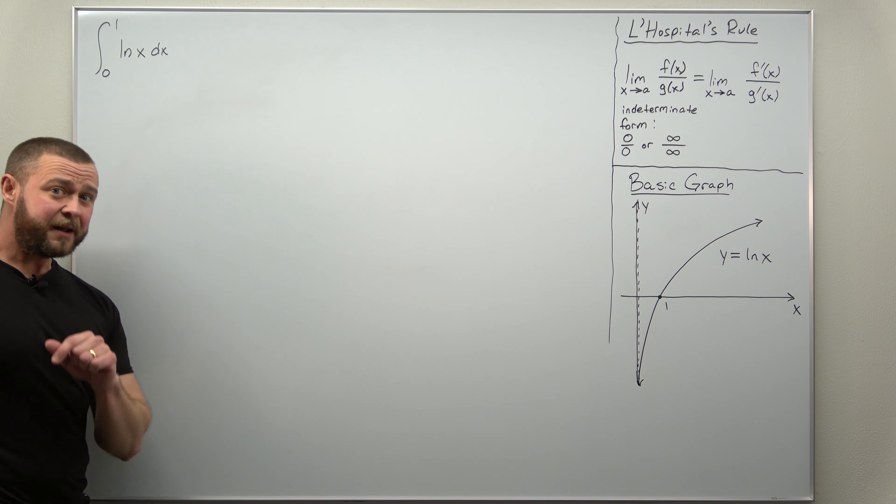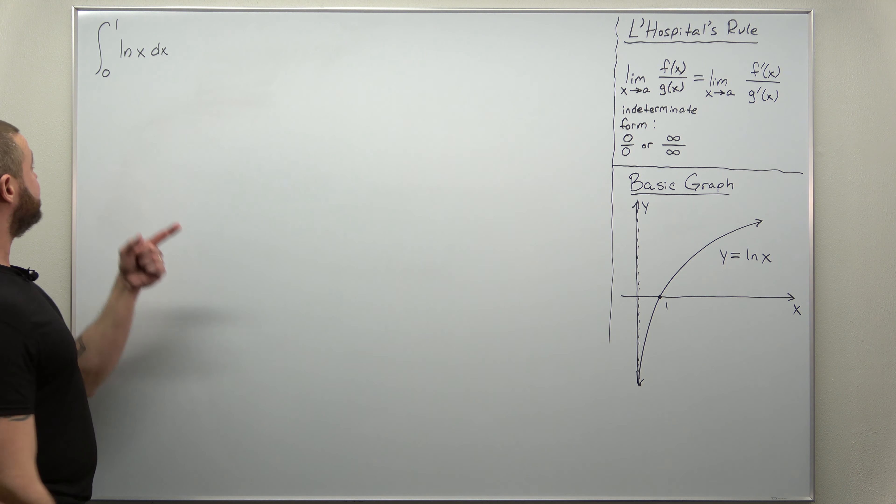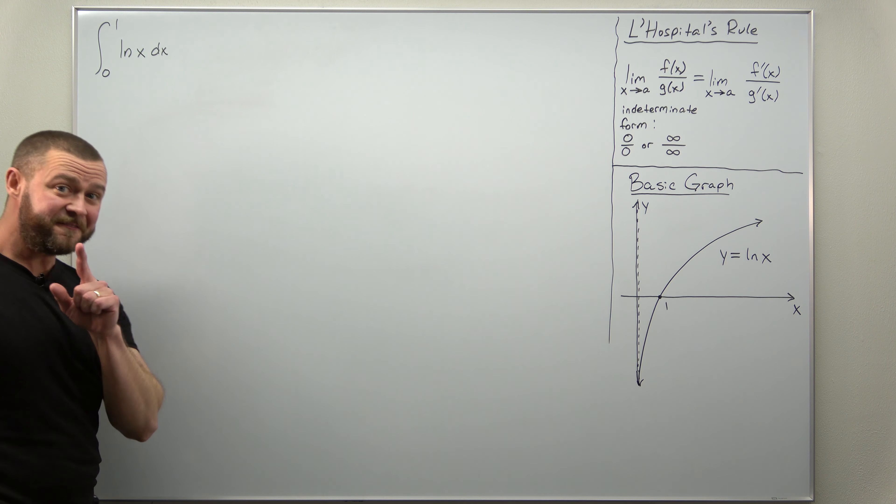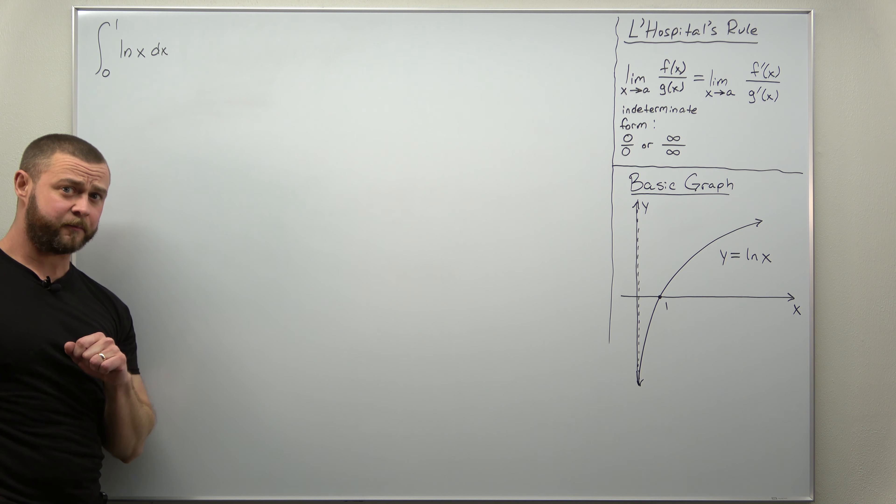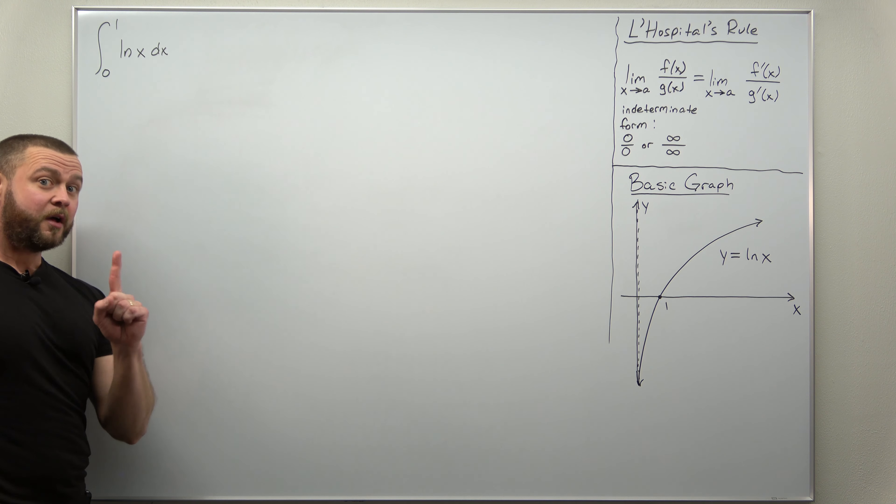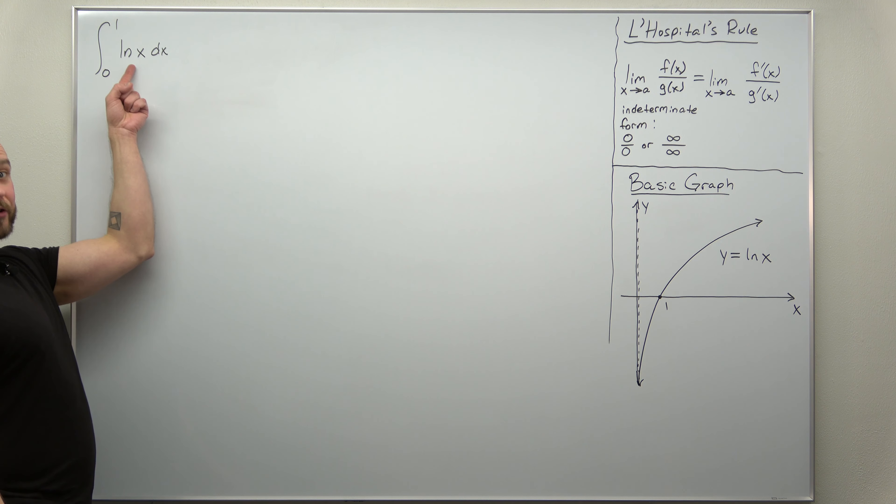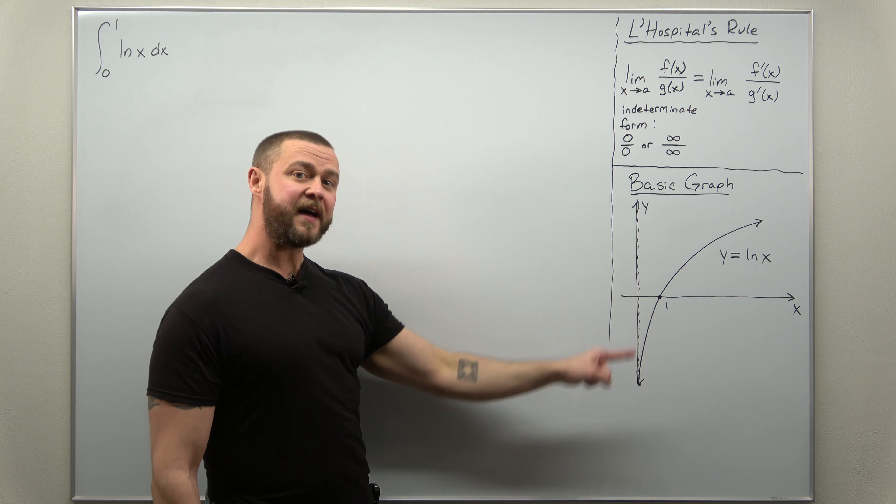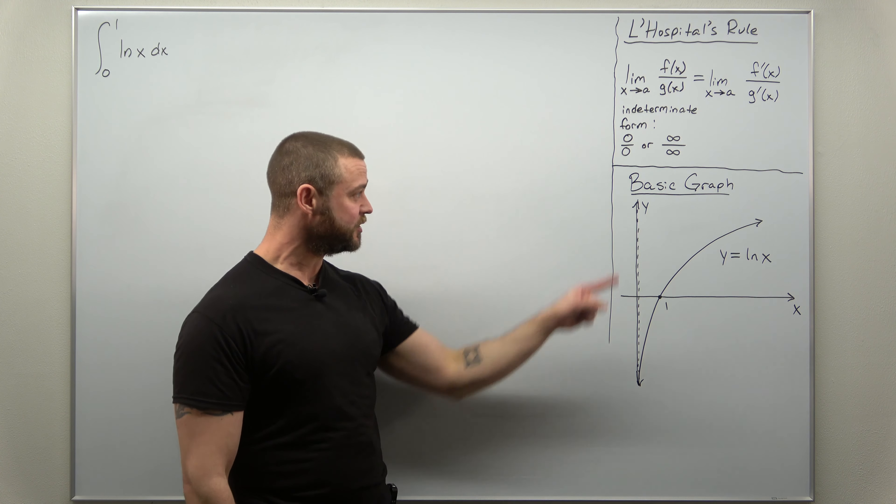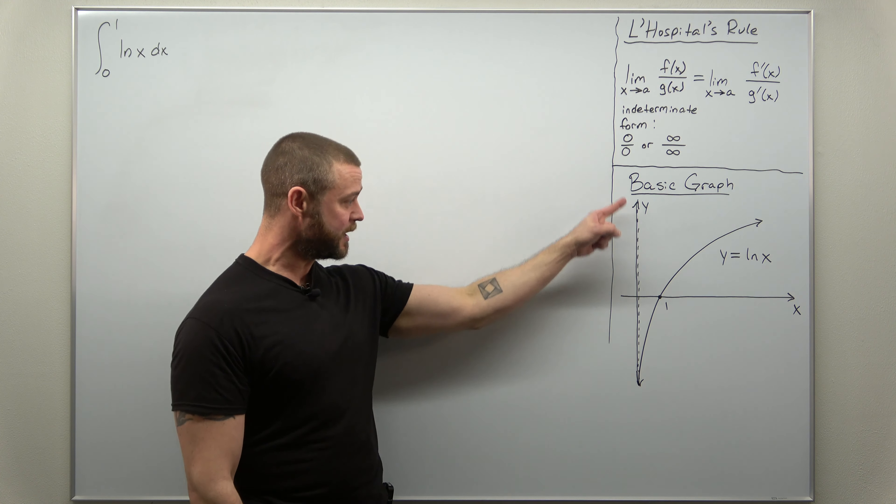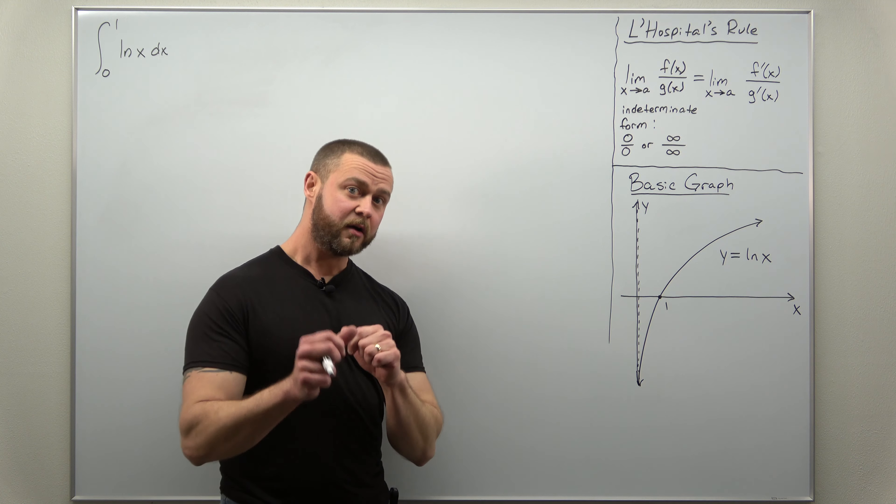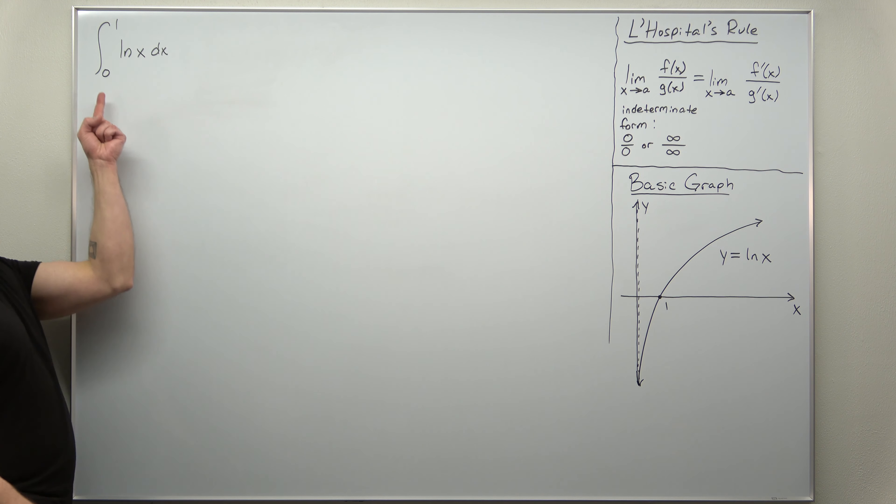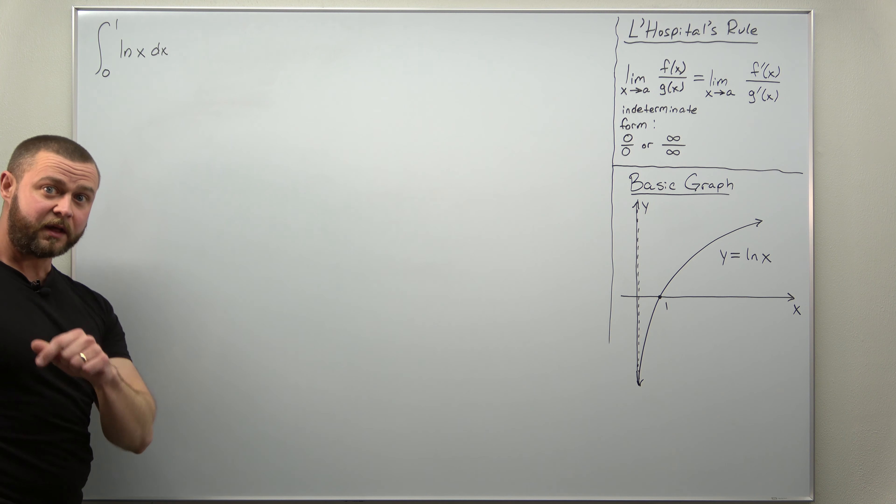You can see it's not an improper integral of the first type since there's no infinities in your integral sign. Now this is an improper integral of the second type due to natural log of x. And again this goes to the graph. Natural log of x has an infinite discontinuity at x equals 0. There's that vertical asymptote. So the problem here for this improper integral is with the lower limit x equals 0.